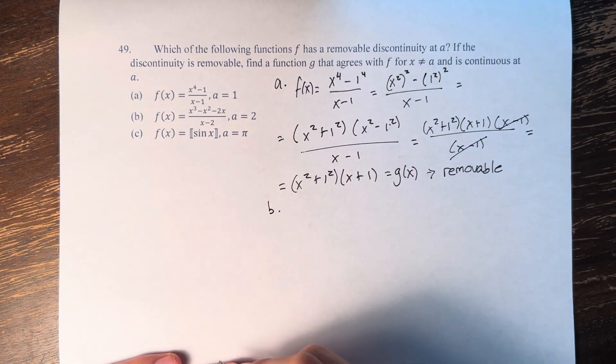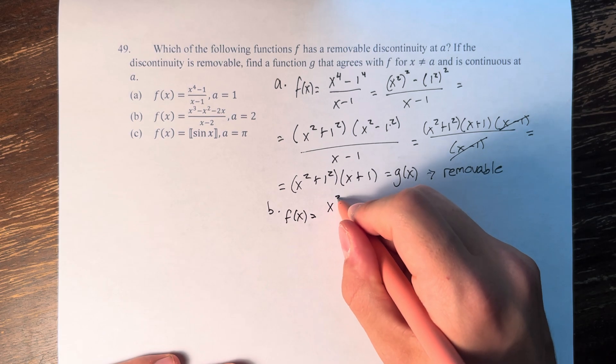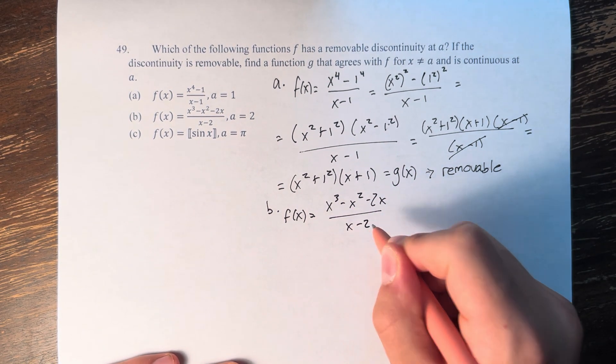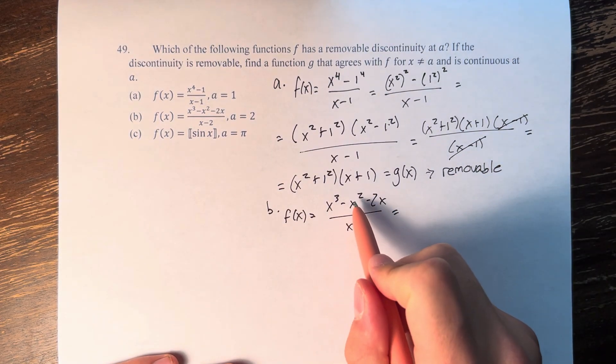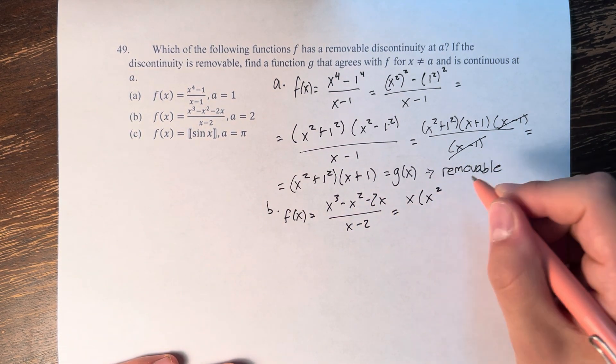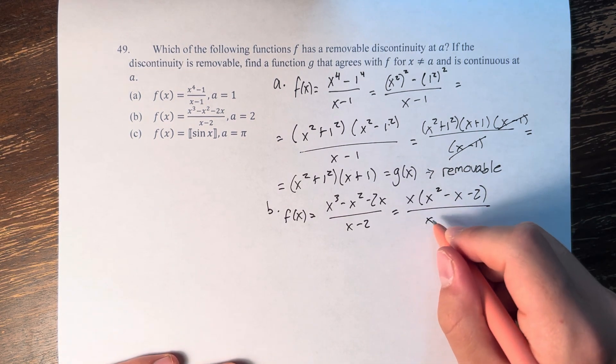In B, we have a similar situation. We have f of x is equal to x cubed minus x squared minus 2x over x minus 2. So we have x cubed x squared x, so we can factor out an x from the numerator. That leaves us with x squared minus x minus 2 over x minus 2.